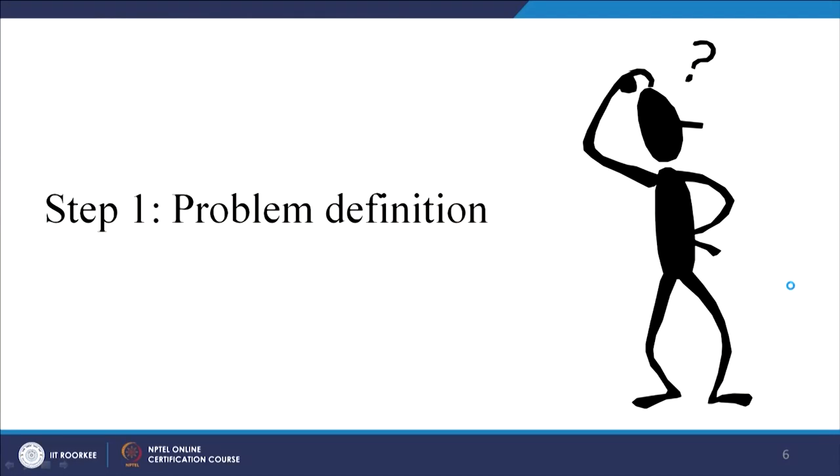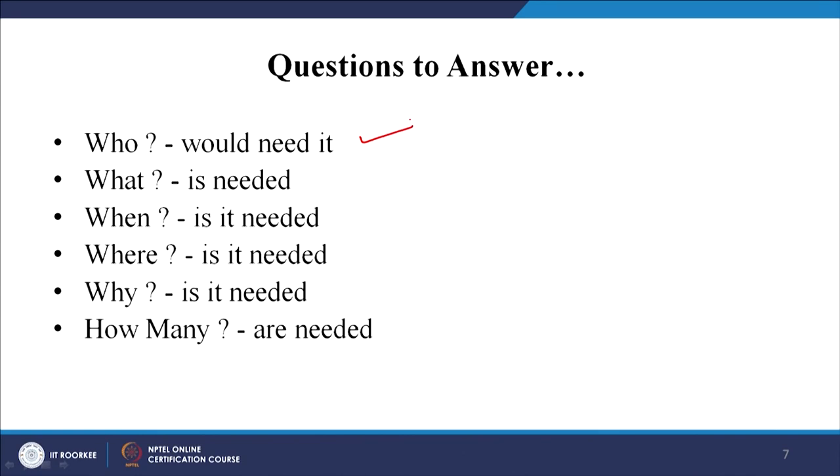Problem definition is the first point. As you can see in this cartoon — what is the problem? When you are thinking about the problem and can get an idea of exactly what you are working on, you will be much clearer. This is the most important first step. How do you get to this problem definition? By answering a few questions. Who would need my study? Who is going to use it? How is it going to be useful and for whom?